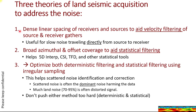This is useful for slow noise traveling directly from the source to the receiver. Number two is broad azimuthal and offset coverage to aid statistical filtering. This has become popular in the last 20 years and still is popular. This helps 5D interpolation, compressive sensing interpolation, TFD — which is a type of spectral editing — statistical spectral editing, especially throwing away outliers, or sometimes throwing away inconvenient noise components.